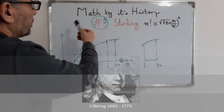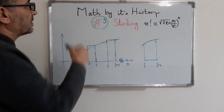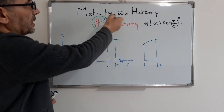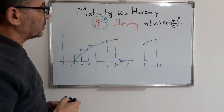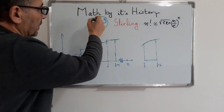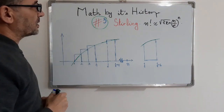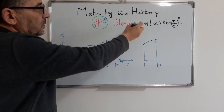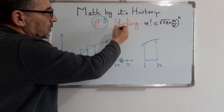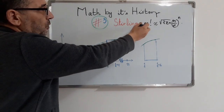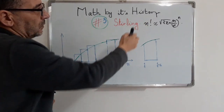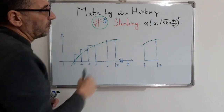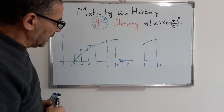Welcome everybody to this series mapped by its history. In this third sequence we will talk about the Stirling formula which involves factorial n.